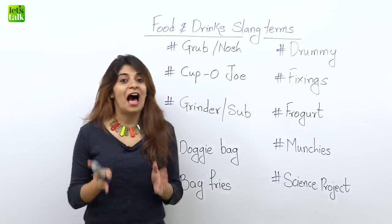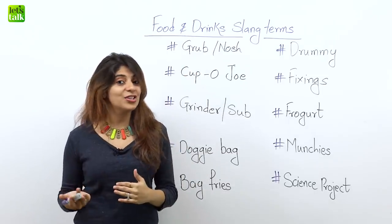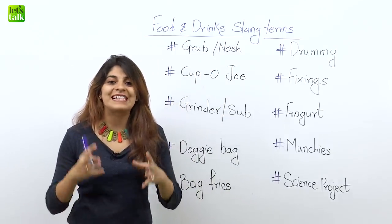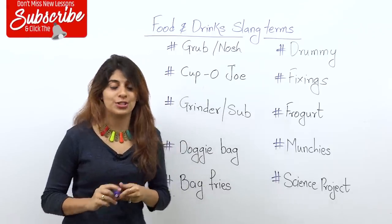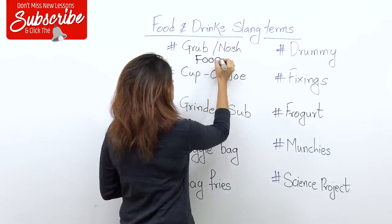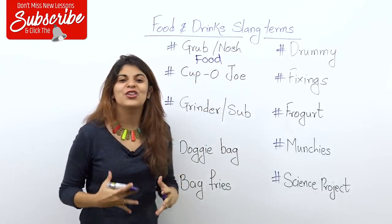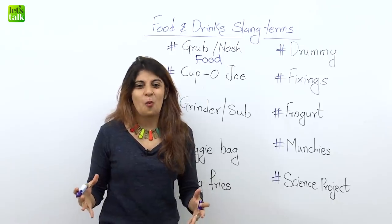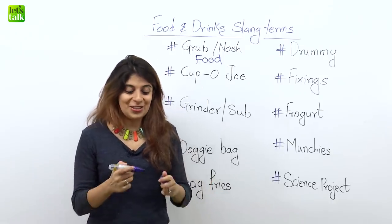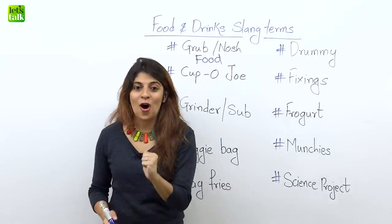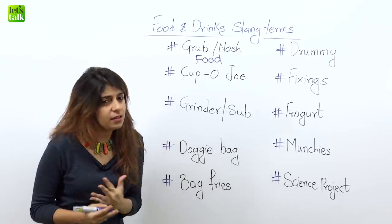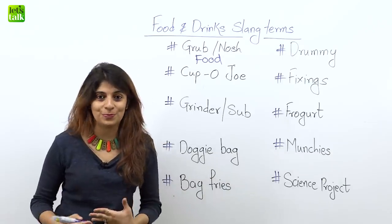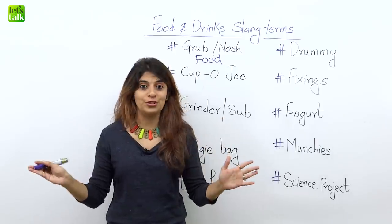The first one is 'grub' or another term that can be used is 'nosh'. Grub and nosh are slang words used for food. So when you are extremely hungry, you are starving and you need to eat some food, then why use the boring word 'food'? Use the slang term grub or nosh. You can say, 'Oh I am so hungry, let's go grab some grub' or 'let's go grab some nosh.' So here you are wanting to eat some food.